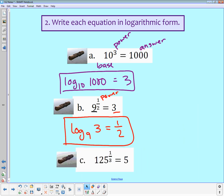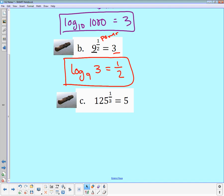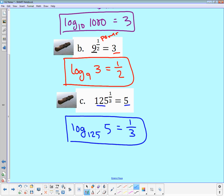One more time. The base here, I have 125 to the 1/3 power equaling 5. The base here is 125. So the log base 125 of the answer, which is 5, is equal to the power, which is 1/3. Log base 125 of 5 is 1/3. So going back and forth from logarithms to exponentials.